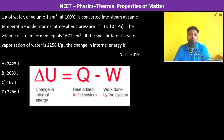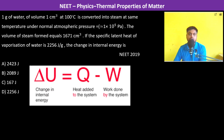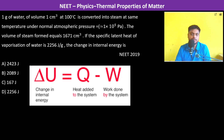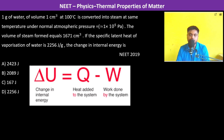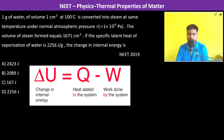1 gram of water of volume 1 centimeter cube at 100 degrees centigrade is converted into steam at the same temperature and normal atmospheric pressure. The volume of steam formed is given, along with the specific latent heat. We need to find the change in internal energy, where delta U equals Q minus W.